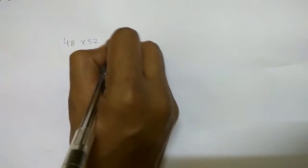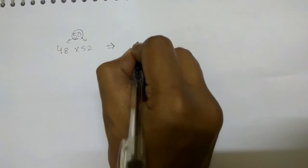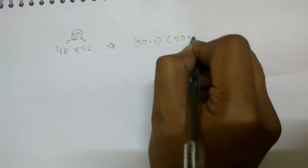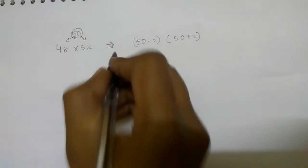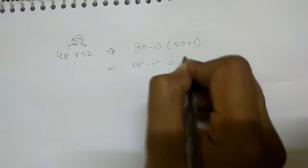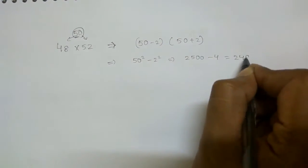For example, 2-digit multiplication: 48 into 52. So 48 and 52 — the center value is 50, with a difference of 2. So 48 is 50 minus 2, and 52 is 50 plus 2. Using A minus B into A plus B equals A square minus B square: 50 square is 2500, minus 4, so the answer is 2496.